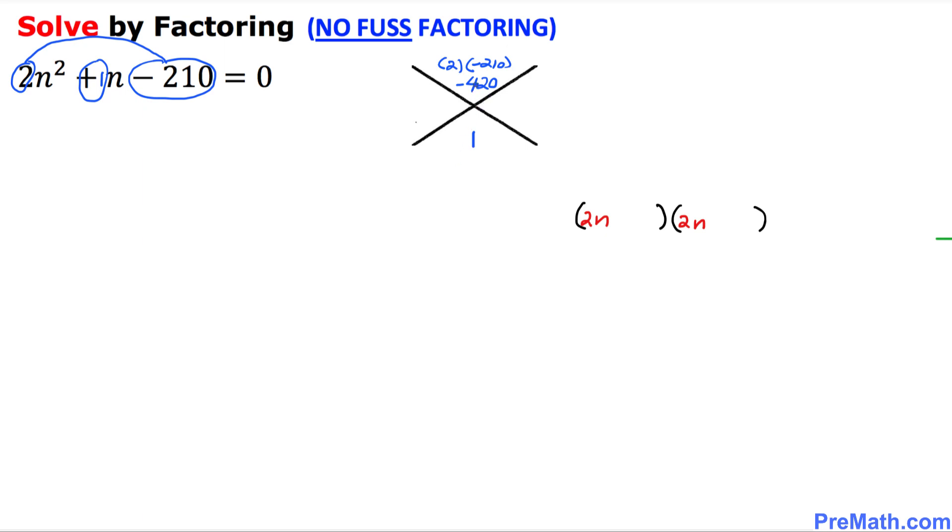Now we are going to find the factors of this negative 420 that if we add, we can get 1. And if we multiply those numbers, we should get negative 420. Let me show you an easy way of doing that.